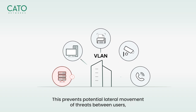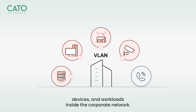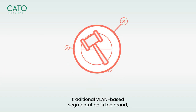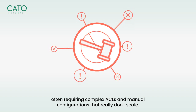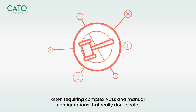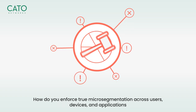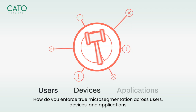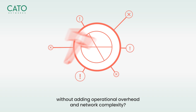This prevents potential lateral movement of threats between users, devices, and workloads inside the corporate network. But here's a challenge: traditional VLAN-based segmentation is too broad, often requiring complex ACLs and manual configurations that really don't scale. How do you enforce true micro-segmentation across users, devices, and applications without adding operational overhead and network complexity?